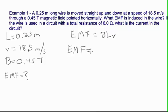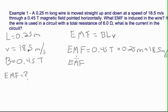Our EMF is equal to 0.45 teslas times 0.25 meters times 18.5 meters per second. And if we round to two significant figures, we get that our EMF is 2.1.